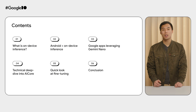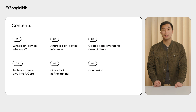In this talk, we will focus on what is on-device inference, how Android incorporates on-device GenAI, showcasing some Google apps leveraging Gemini Nano and why it was the right solution for them, a technical deep dive into AI Core — the system service that enables access to AI foundation models running on-device — a quick look at fine-tuning and why it's important for Gemini Nano, and lastly, the conclusion.